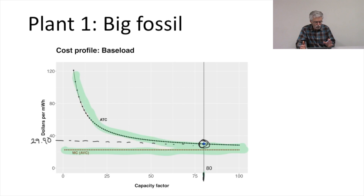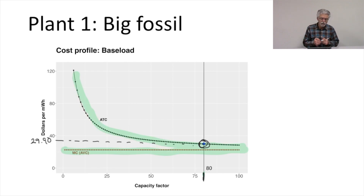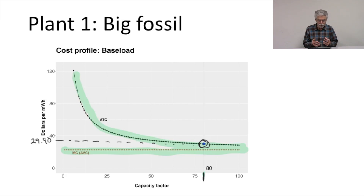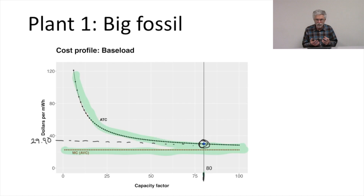The average total cost and marginal cost curves, along with the anticipated capacity factor, tell us a lot about the long run costs of the power plant. It's also going to tell us a lot about when we should use it relative to opportunities to use other power plants.